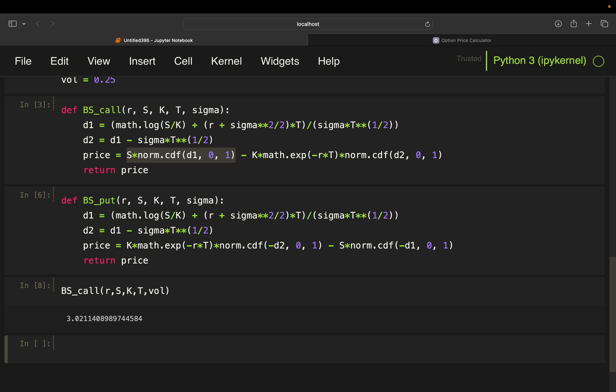Now, as promised, put call parity. Let's take this one and subtract the put value. And this value we are getting. So, difference of call minus put has to be the same as we said in the put call parity example.